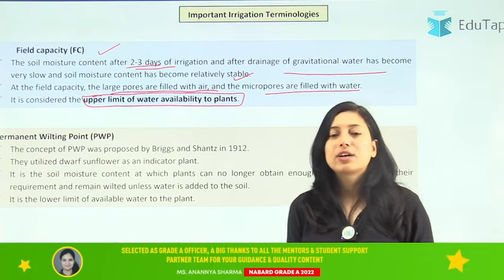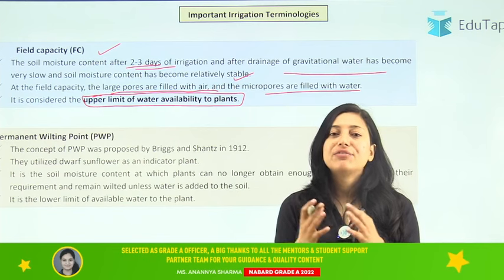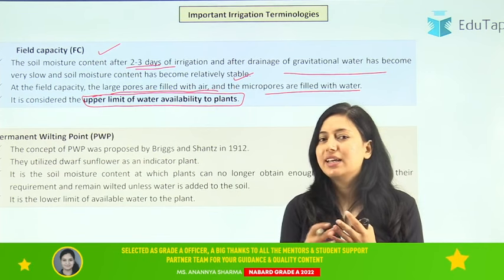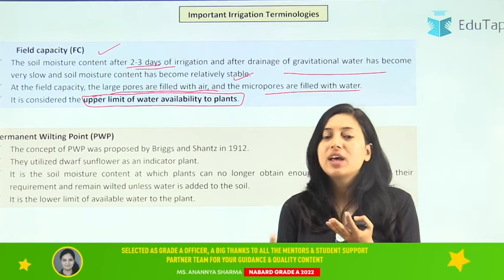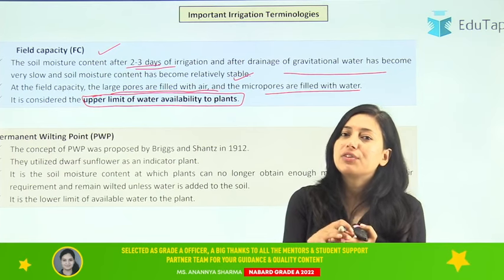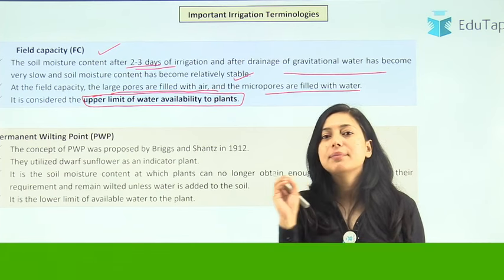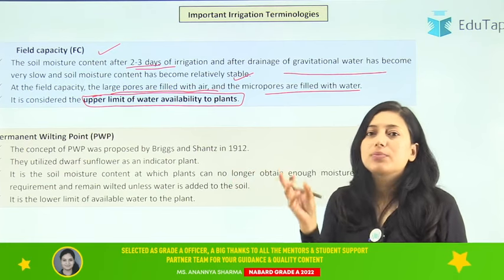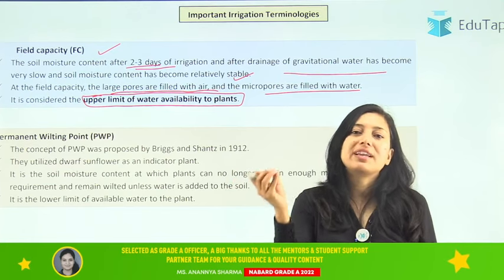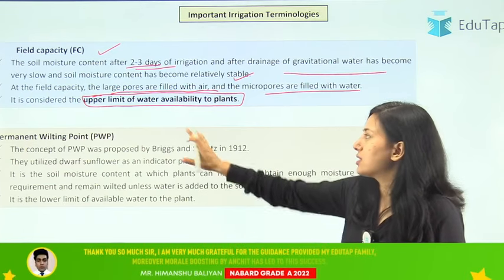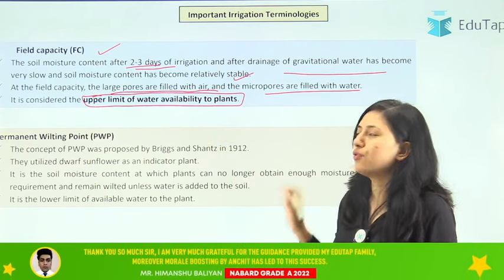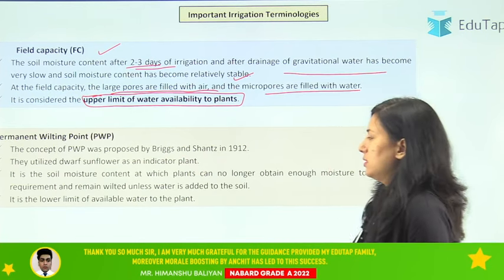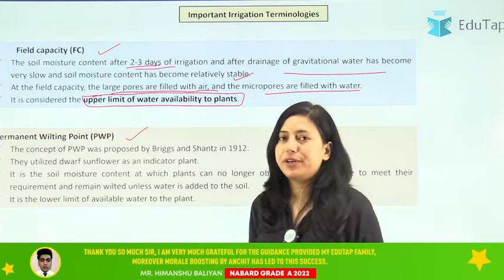Field capacity is the upper limit of water available to the plant. At field capacity, macro pores are emptied and filled with air spaces, while only micro pores are filled with water, and this water is available to the plant. That is why it is called the upper limit of water availability to the plant.